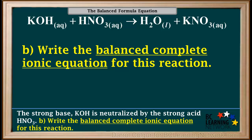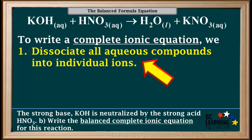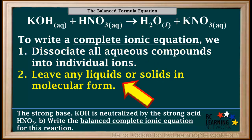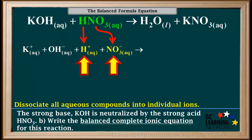Part B of this question is to write the balanced complete ionic equation for this reaction. In order to write a complete ionic equation, once we have the balanced formula equation, we start by dissociating all aqueous compounds into their individual ions, but we leave any liquids or solids in molecular form. The first aqueous compound is KOH, which is soluble and dissociates into one aqueous K+ ion and one aqueous OH− ion. HNO3 is the strong acid, nitric acid. Strong acids dissociate completely into their ions, so HNO3 dissociates completely into one H+ and one NO3− ion.